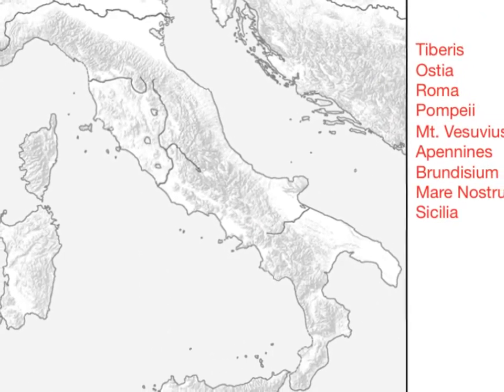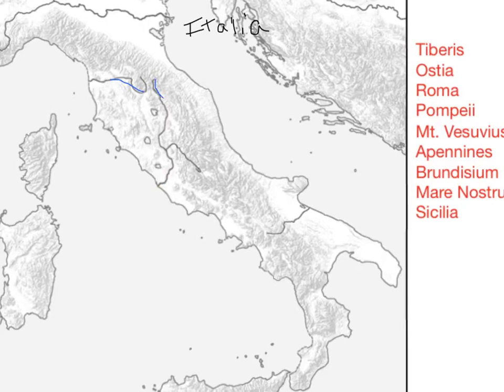The first item is the Tiberis — that is the name of the river on which Rome is located. Notice there are a couple of major rivers here. There's one going across this way. The Tiberis, you will notice, looks like it's pointing downwards. So there it is. We're going to zoom in and color it blue. There it is: the Tiberis, the Tiber River.